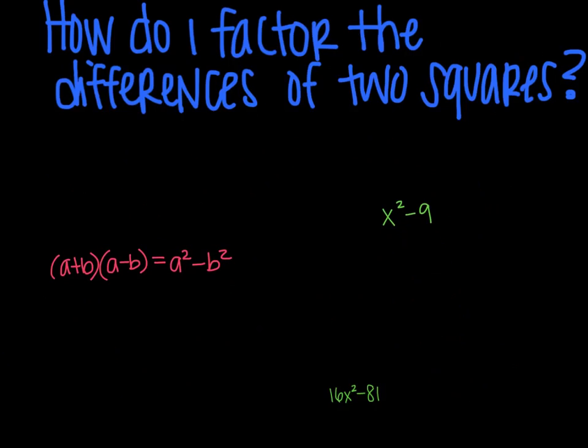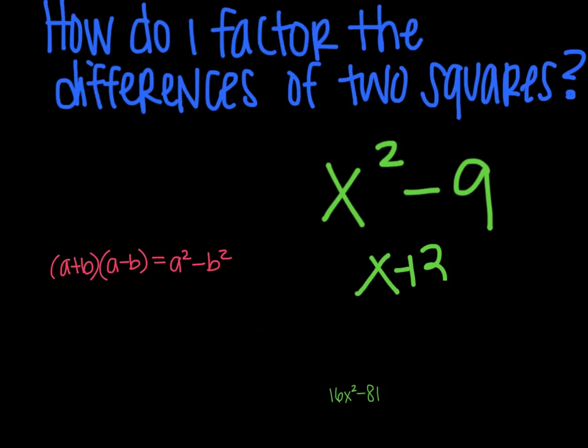The first example for you is x²-9. And I know that this is going to be (x+3) and (x-3) because it's the difference of two squares, which gives me nothing in the middle, no b terms. And then the 3² is what gives me the 9.